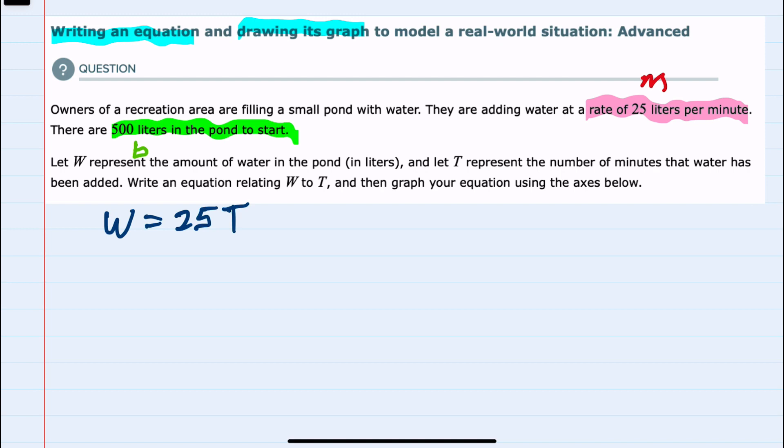So at one minute it's added 25 liters. At two minutes it will have added 50 liters. At three minutes it will have added 75 liters and so on. So the rate gets multiplied by time.